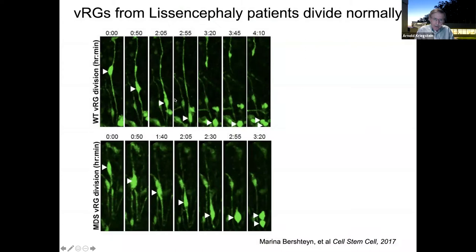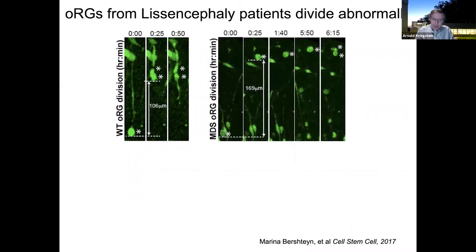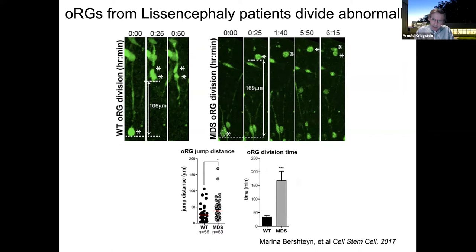Ventricular radial glia in Miller-Dieker samples behaved dynamically the same as controls, dividing in the same time course and spending the same time in each cell cycle phase. But the outer radial glia in Miller-Dieker samples jumped much farther than normal and then failed, arrested in mitosis — the exact phenotype we saw when blocking microtubules with nocodazole. This makes sense because LIS1 is a microtubule-associated protein. Critically, the defect was cell-type specific, affecting outer radial glial behavior but not other progenitors — a finding that couldn't have been performed in the mouse.